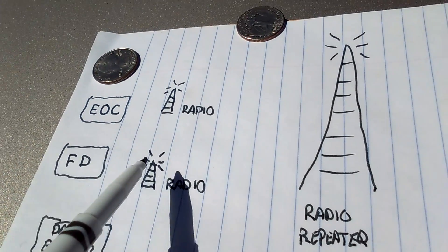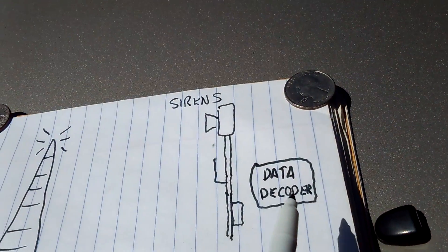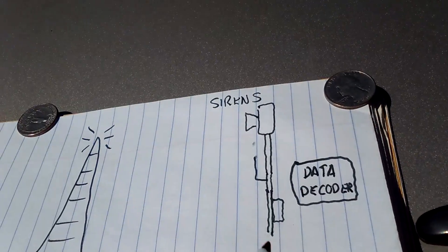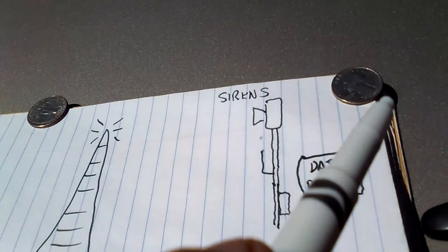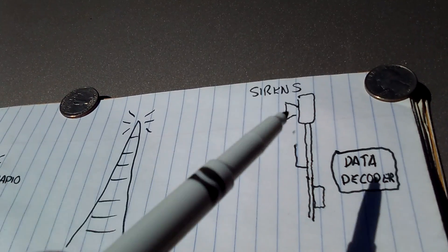They basically send the code through a radio to the repeater to all the sirens, which go off for about three minutes. First, they do the alert sirens and then they do the warning. The alert's the steady tone. The warning is the wavering tone.